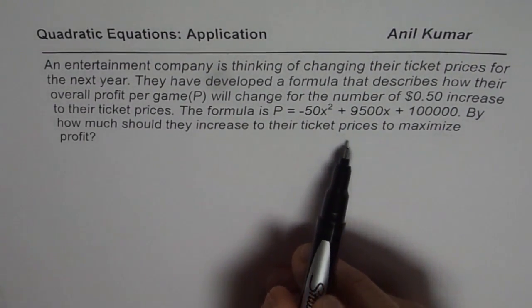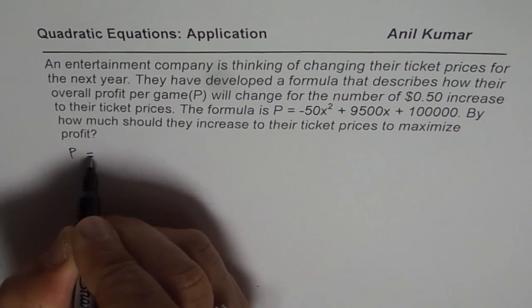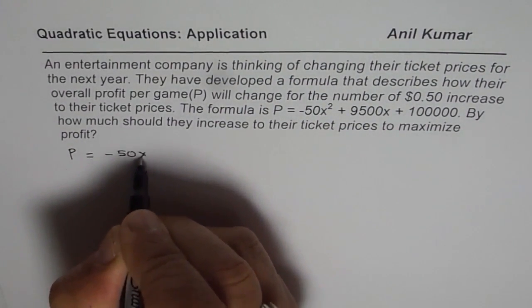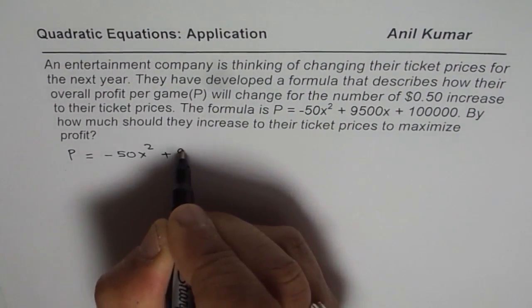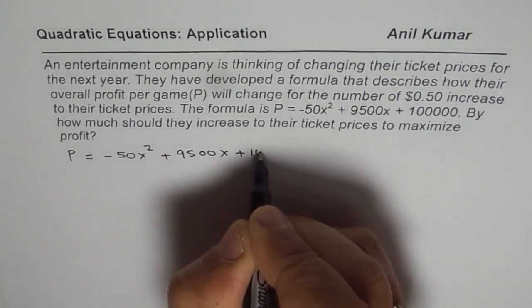Well, to maximize means we need to find the vertex and the best way to find the vertex is completing the squares. So we have minus 50x squared plus 9500x plus 100,000.